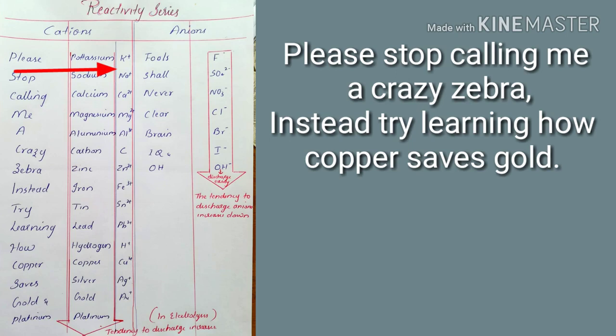So P is for potassium, S for sodium, C for calcium, M for magnesium, A for aluminium, C for carbon, Z for zinc, I for iron, T for tin, L for lead, H for hydrogen, C for copper, S for silver, G for gold, and P for platinum.